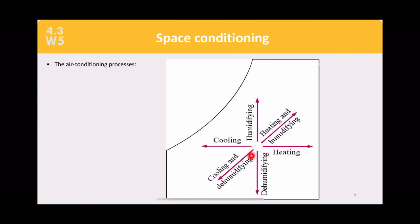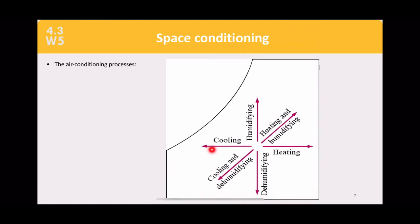The next slide shows a psychrometric chart with processes. Starting from a base point: moving upward increases humidification because the humidity ratio increases vertically; moving downward is dehumidification because moisture is removed; moving right is heating — increasing dry bulb temperature without adding any moisture; moving left is cooling — decreasing temperature without removing moisture.